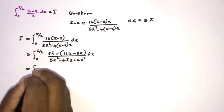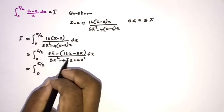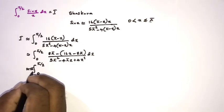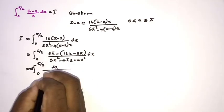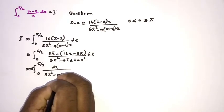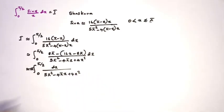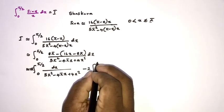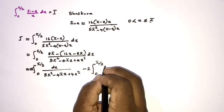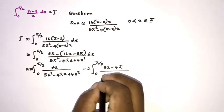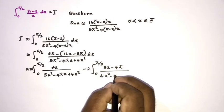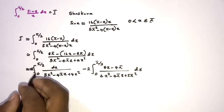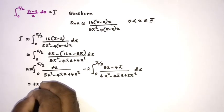The integral splits as: 8π times the integral from 0 to π/2 of dx over (5π² − 4πx + 4x²), minus 2 times the integral from 0 to π/2 of (8x − 4π) over (4x² − 4πx + 5π²) dx.